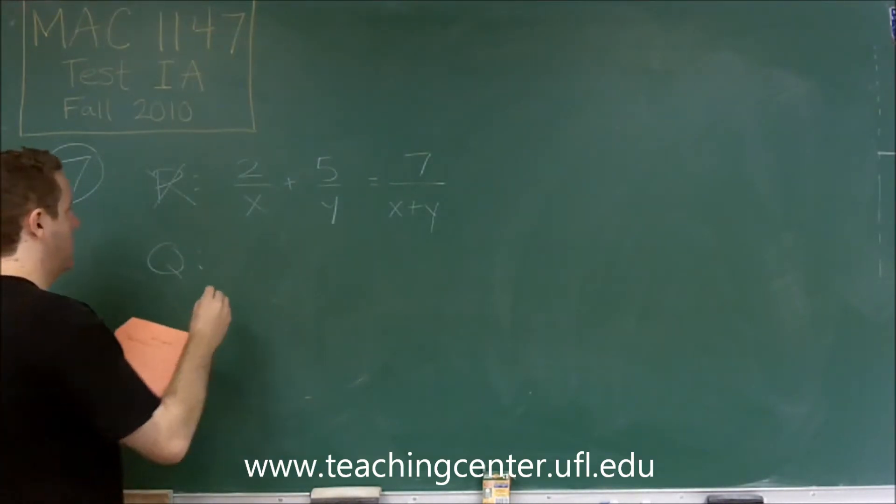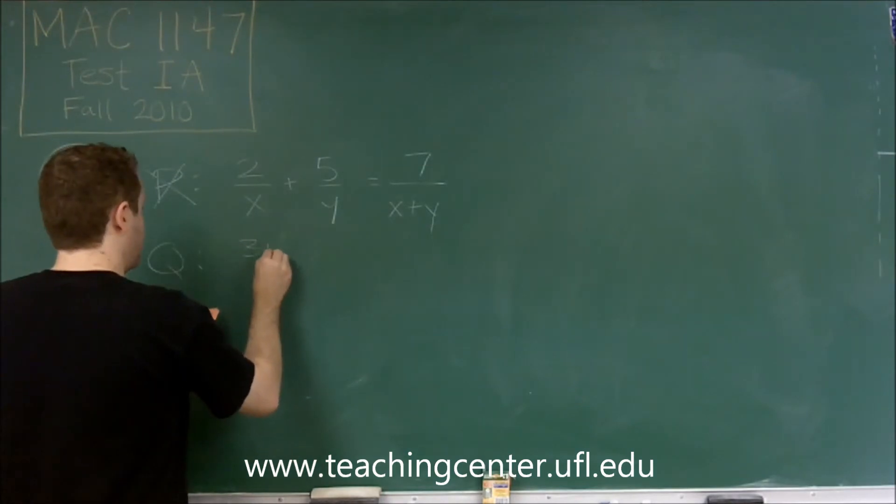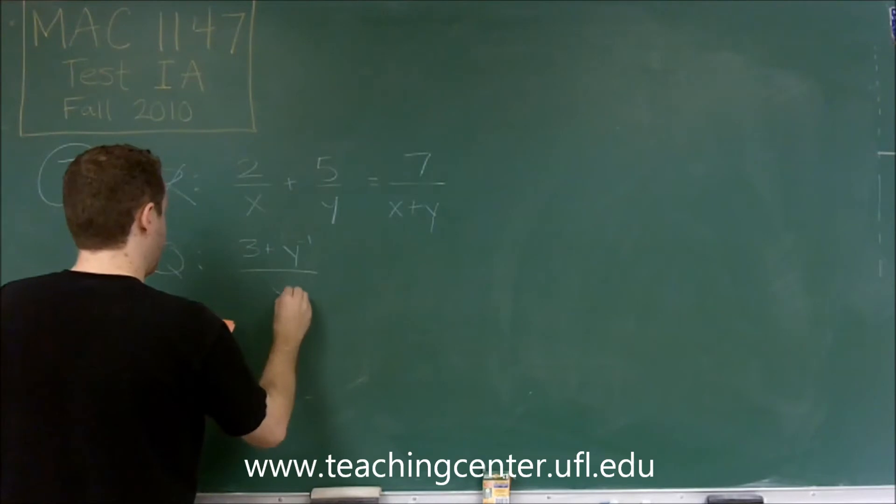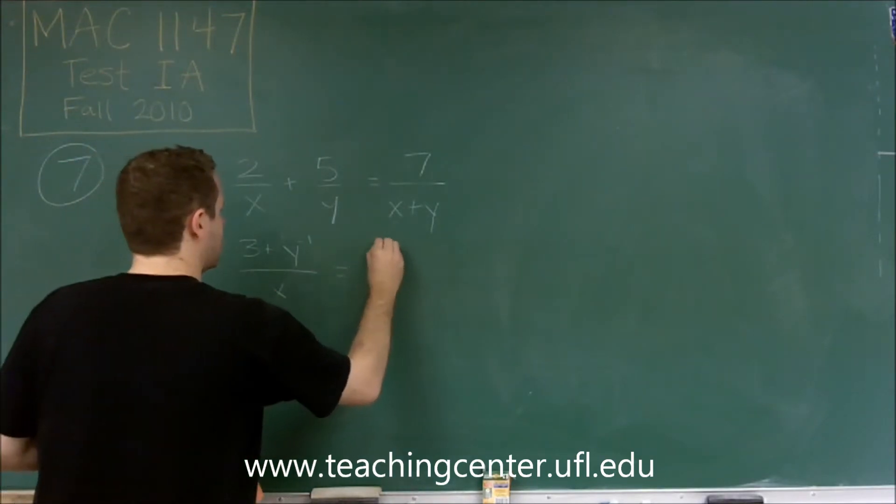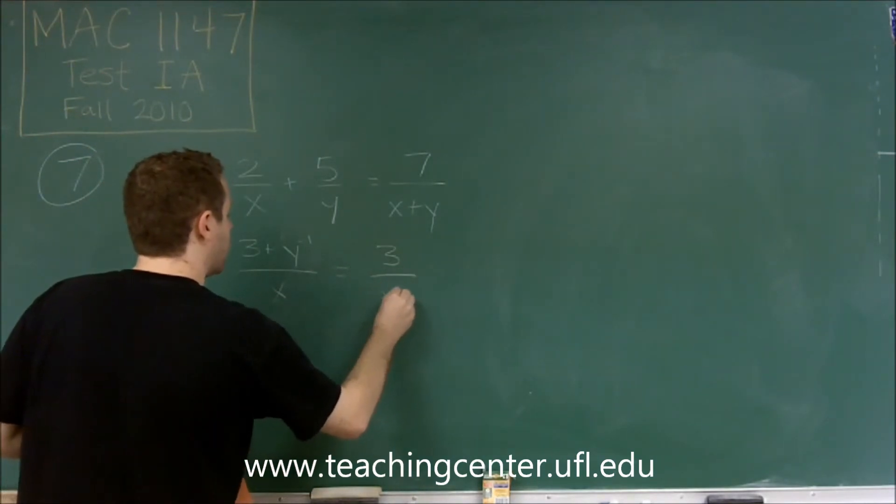Alright, for Q, you have 3 plus y to the negative 1 over x equals 3 over xy. Okay, so another common mistake here.